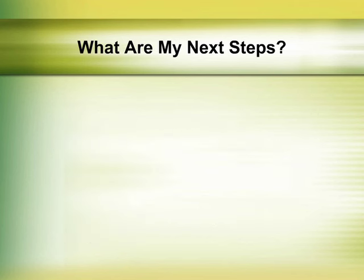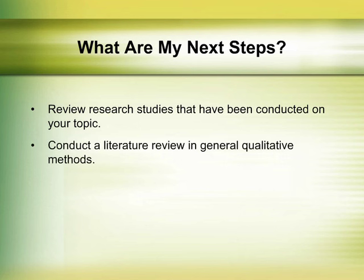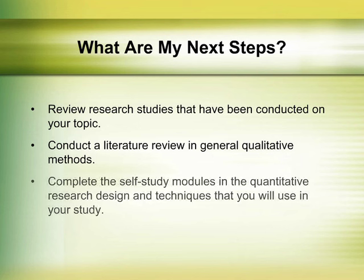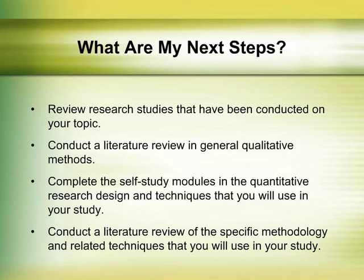Once you have decided to embark upon the process of conducting a quantitative study, use the following steps to get started. First, review research studies that have been conducted on your topic to determine what methods were used. Consider the strengths and weaknesses of the various data collection and analysis methods. Next, review the literature on quantitative research methods. Every aspect of your research has a body of literature associated with it. Just as you would not confine yourself to your course textbooks for your review of research on your topic, you should not limit yourself to your course texts for your review of methodological literature. Read broadly and deeply from the scholarly literature to gain expertise in quantitative research. Additional self-paced tutorials have been developed on different methodologies and techniques associated with quantitative research. Make sure that you complete all of the self-paced tutorials and review them as often as needed. You will then be prepared to complete a literature review of the specific methodologies and techniques that you will use in your study.